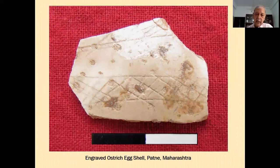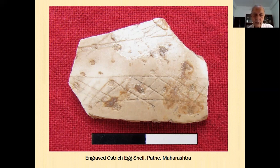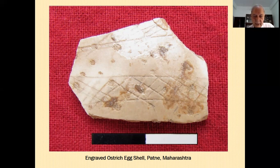Interesting ostrich eggshells were recovered from excavations by Dr. S. A. Sali of the Archaeological Survey of India from the Patne site in Maharashtra. Along with Upper Paleolithic blade and burin lithic industry tools, he recovered more than 100 ostrich eggshell pieces, of which two or three had engravings. Particularly, between two parallel lines, the space in between was hatched. This is regarded as one of the earliest engravings, and carbon-14 dates of these ostrich eggshells go back to 25,000 BP.